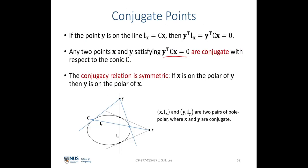Now let's look at the definition of conjugate points. If point y lies on the polar line l_x = C·x of the pole x, then y^T · l_x = y^T · C · x = 0. Any two points x, y satisfying y^T · C · x = 0 are conjugate with respect to conic C. The conjugate relation is symmetrical: if x lies on the polar of y, then y lies on the polar of x. Geometrically, y lies on the polar line l_x of pole x, so x must also lie on the polar line l_y of y.